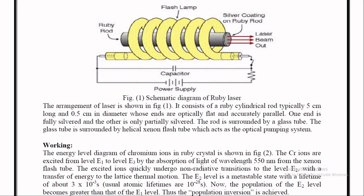The laser beam which is the output of this ruby laser is red color as shown in the schematic diagram. Now we will see the working of ruby laser.